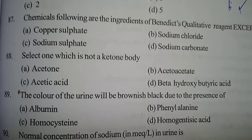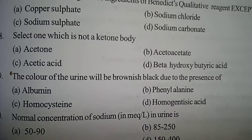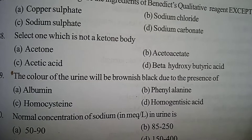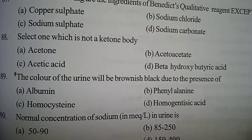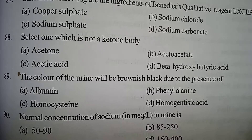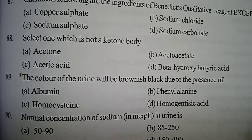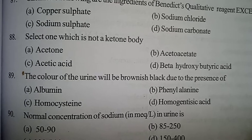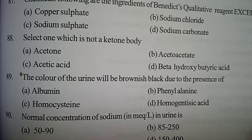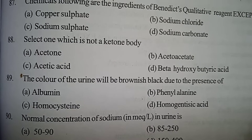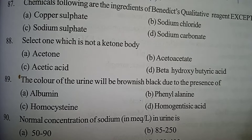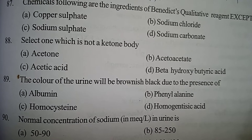Next question: The color of the urine will be brownish-black due to the presence of which substance? Option A: albumin. Option B: phenylalanine. Option C: homocysteine. Option D: homogentisic acid.